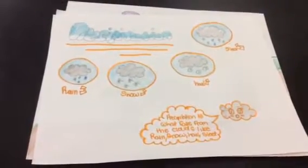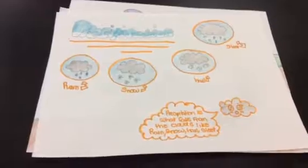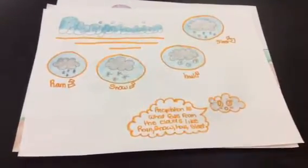Precipitation. Precipitation is what falls from the clouds to the ground, like hail, snow, rain, and sleet.